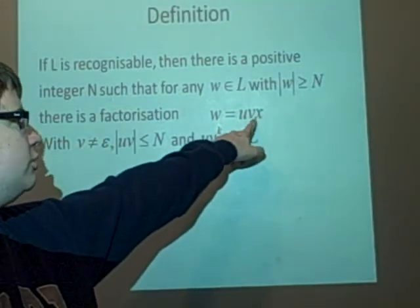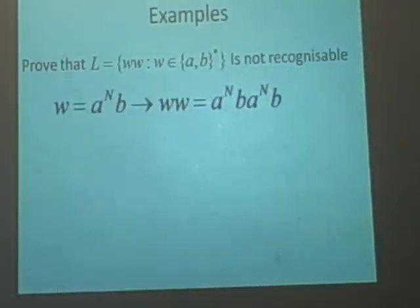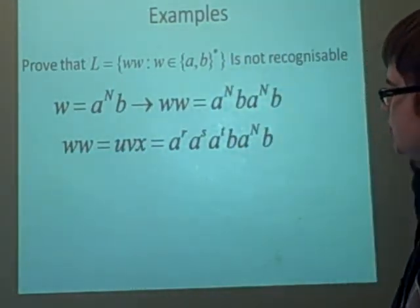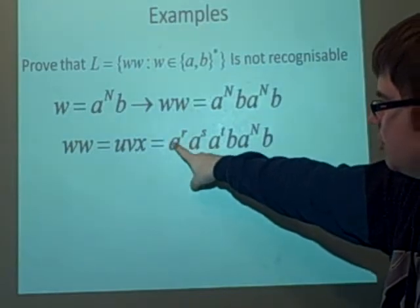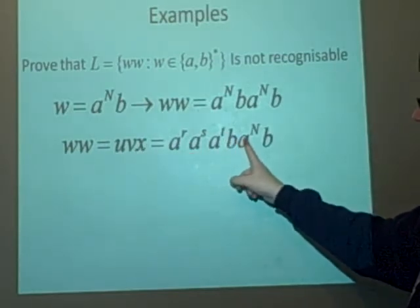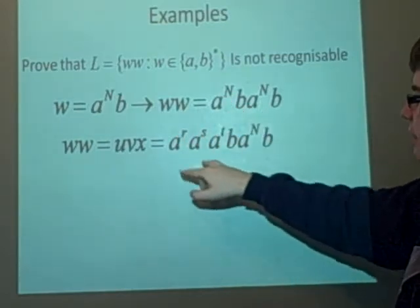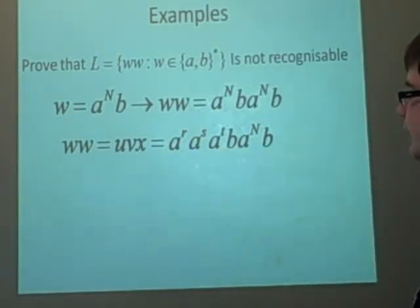Now we need to find the factorization U, V, X, with U, V, the size of that being less than N. Now, because our first letter A is N, it means we're going to have to divide A up. So it can be less than or equal to, but it's nice to divide it as much as you can, just to make it work a bit better. So if we divide it up, so that we'll let U equal a^r, V equal a^s, and X equal a^t b a^N b, because the size, if we have r plus s plus t is equal to N, then we're pretty sure the size of UV will be less than N, given that T is not, even if T is 0, then the size will be N, which is still accepted.